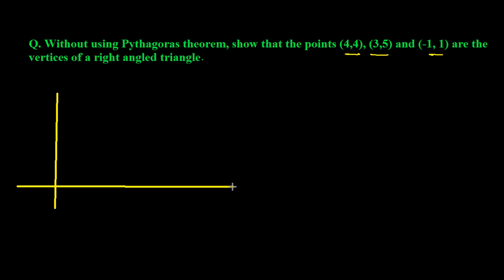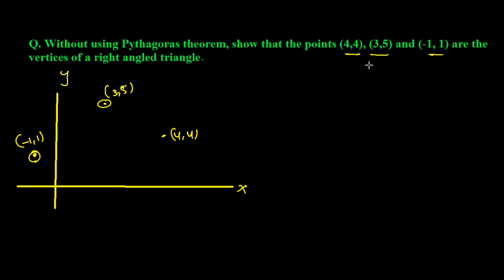This is the y-axis and this is the x-axis. Now (4,4) will be somewhere like this — so this is (4,4). And (3,5) will be somewhere here — let's say this is (3,5). And (-1,1) — since it is negative, it will be somewhere here. So this is (-1,1).